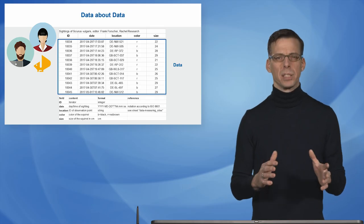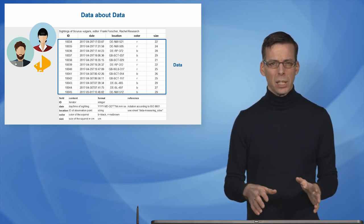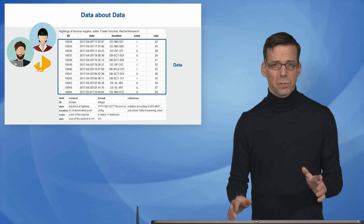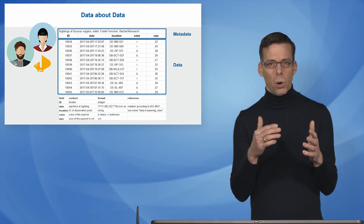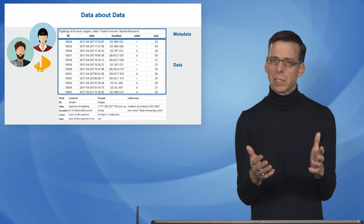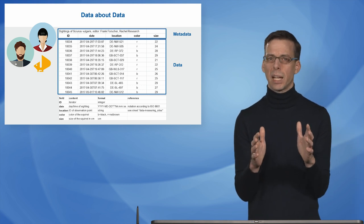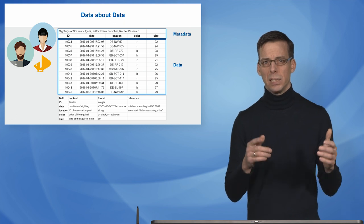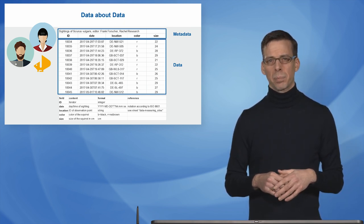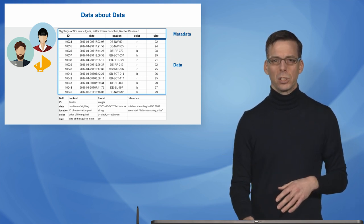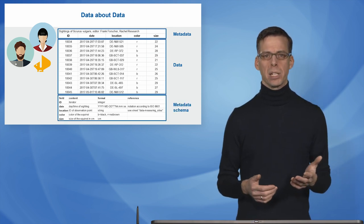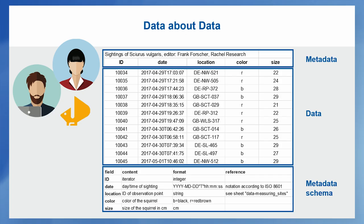Agreeing on the data is not enough; researchers must also ensure they have the same understanding of the data. This is where metadata comes into play. At minimum, you have column headings like ID, date, location, or color. But typically that is far too short — you must have additional information explaining how IDs are generated (for example, whether they are integer numbers), how dates are recorded (ISO format or not), and what locations are agreed upon.